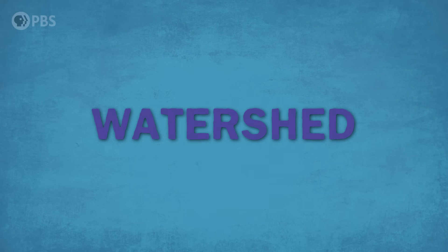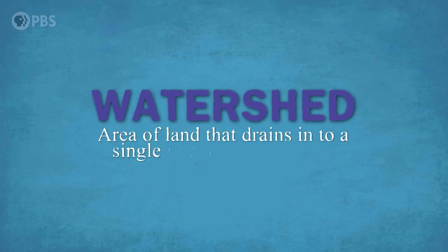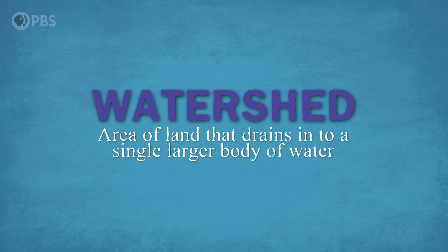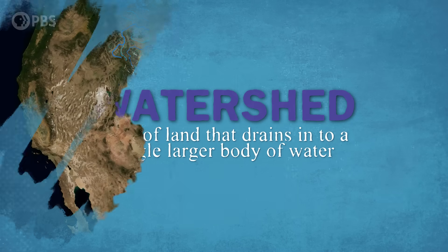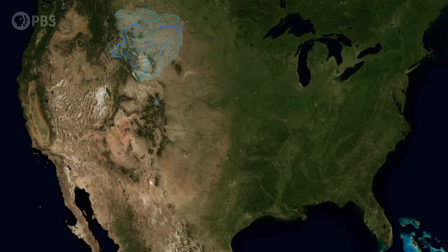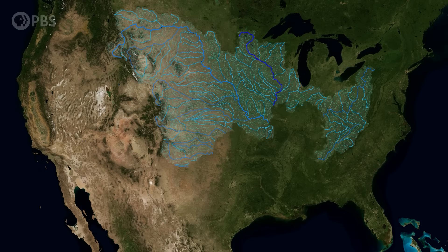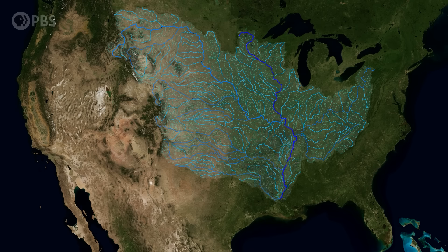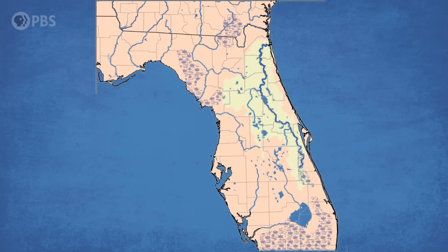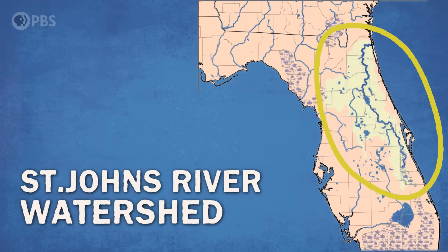A watershed is an area of land that drains into a single larger body of water. All land on Earth is part of some watershed, and sometimes multiple watersheds. A few can be really big—the Mississippi watershed, for example, contains thousands of square miles of land that eventually drain into the Mississippi River. But even on a smaller scale, all of this shaded area is part of the St. John's River watershed.